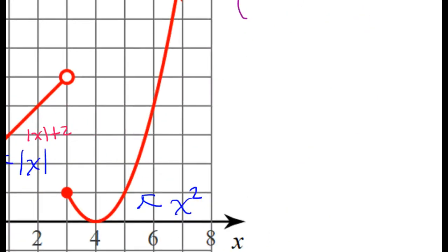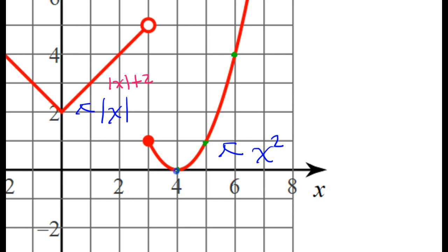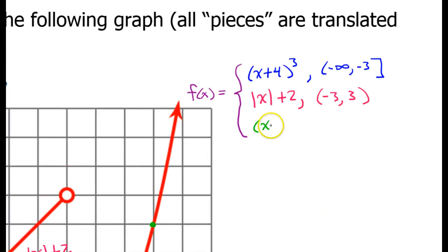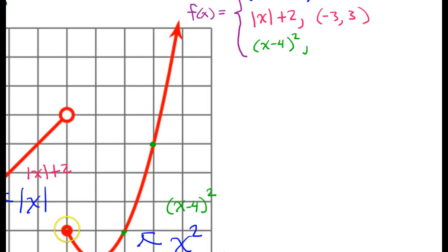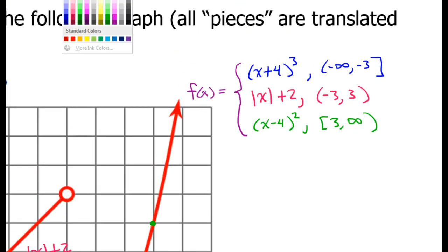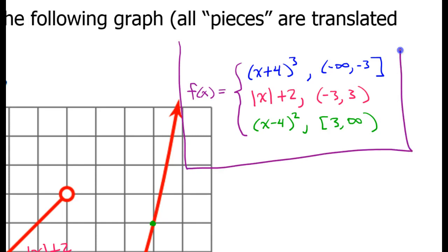Now the third and final piece of the piecewise function is this parabola. Imagining that this was the origin, it would be 1, 1 and then 2, 4 — so these points are falling in the normal way. This is just shifted to the right by 4. So the equation for this should be (x − 4) squared, because that's what it looks like when you shift something to the right. I'm going to put (x − 4)², and then I'll put the domain, which is from 3 to infinity with a bracket because of the closed circle. And that's it — this is the piecewise function that matches the graph.